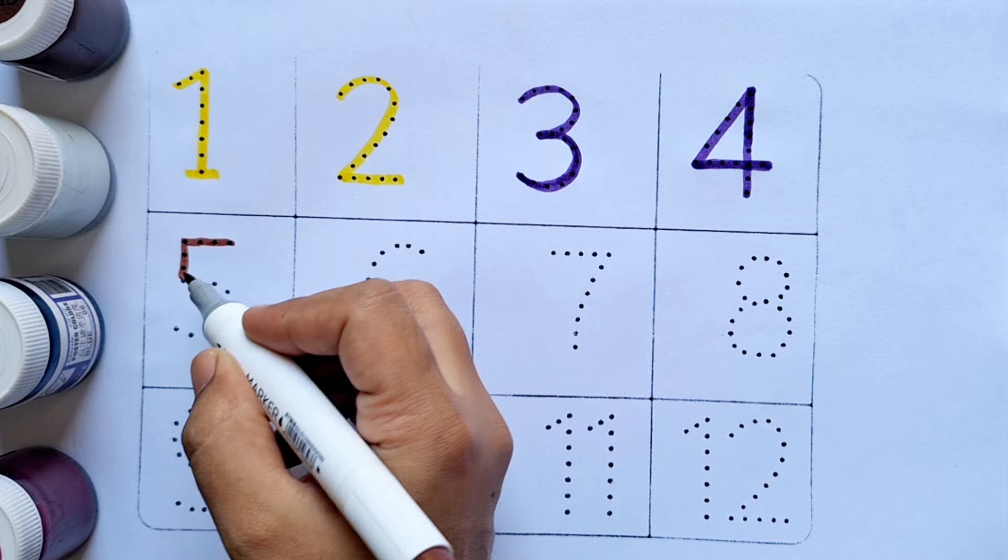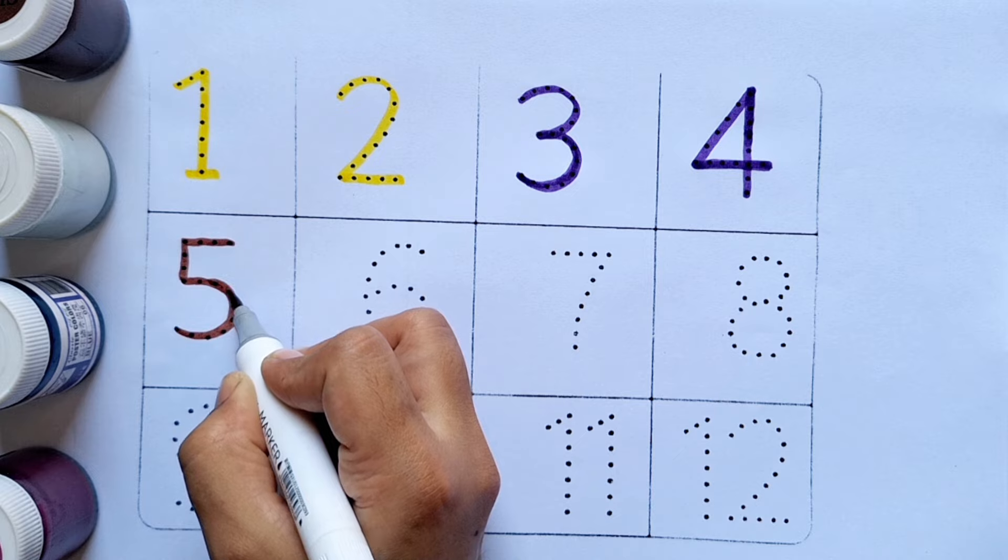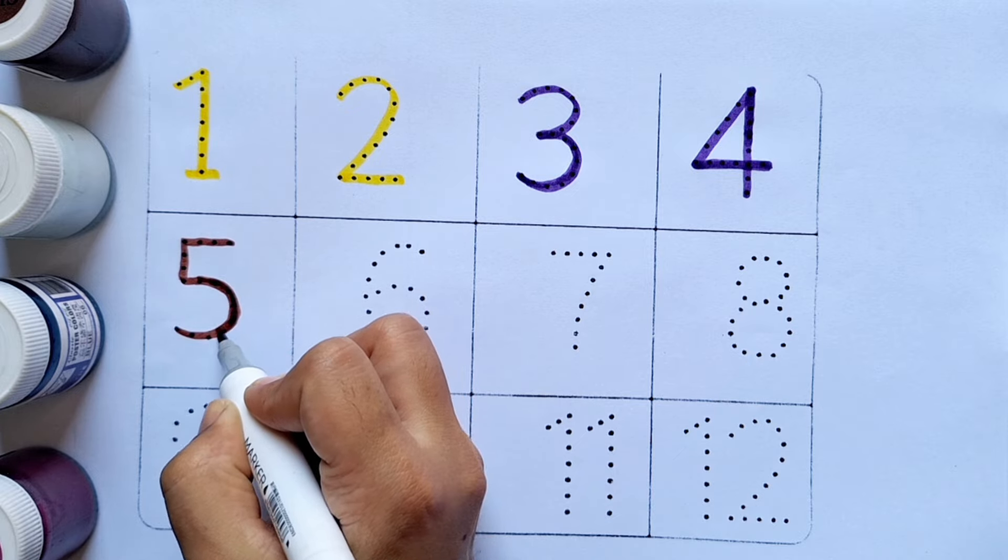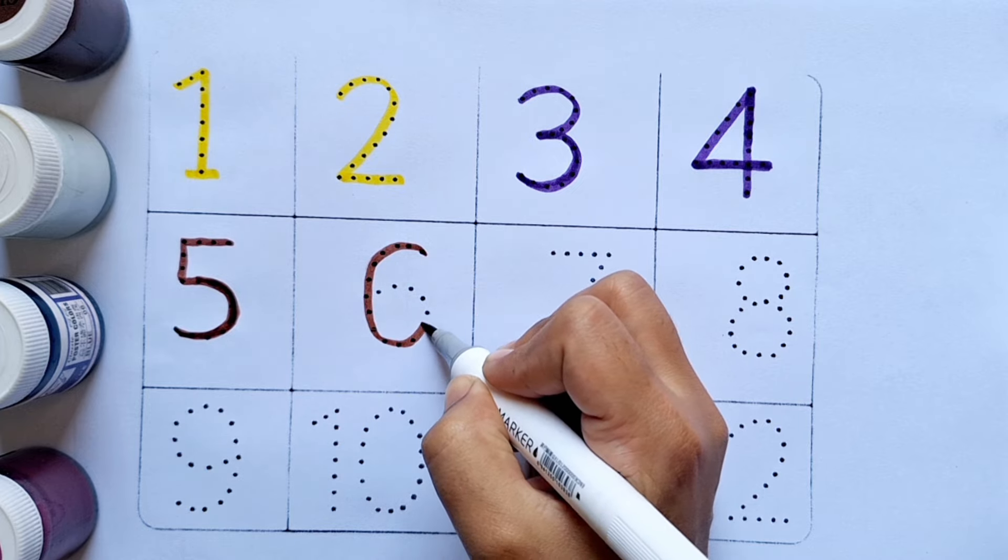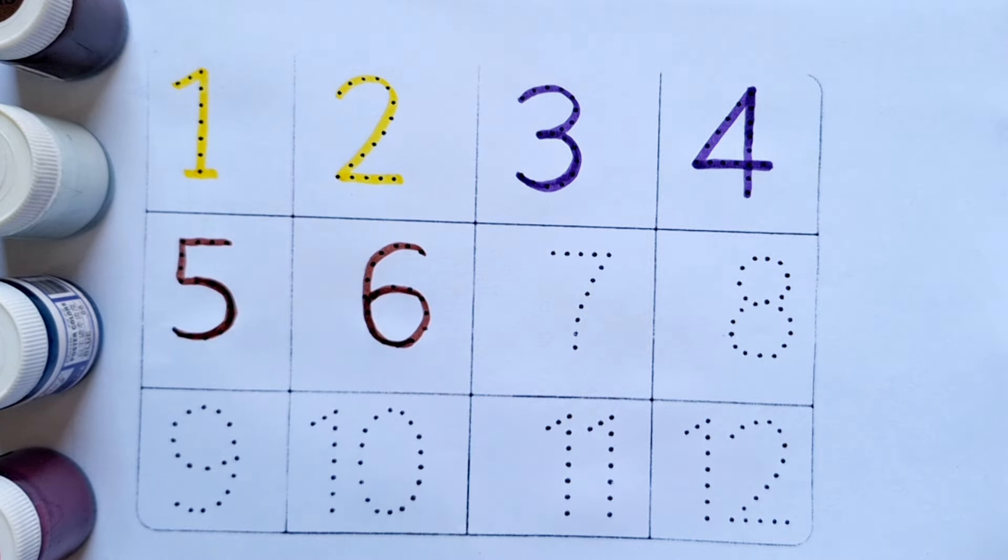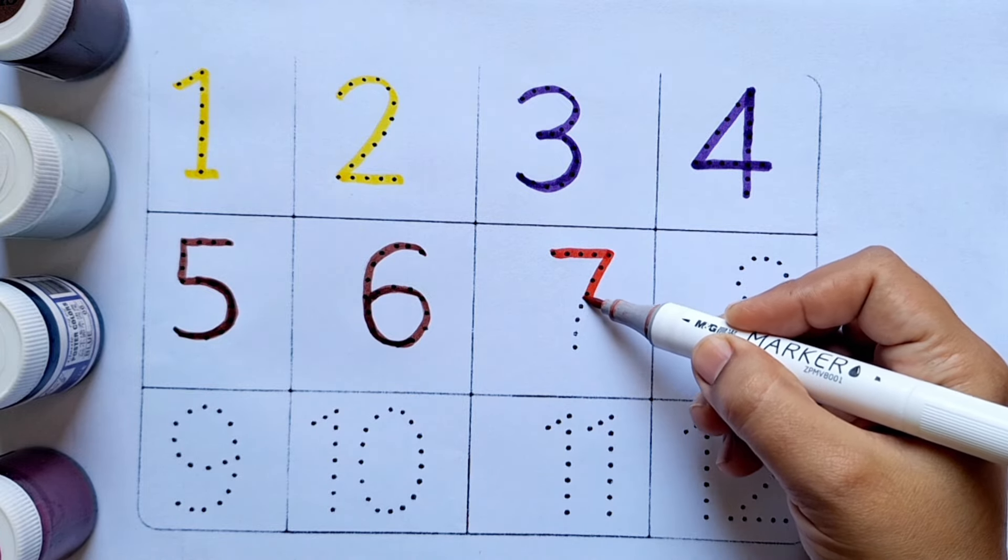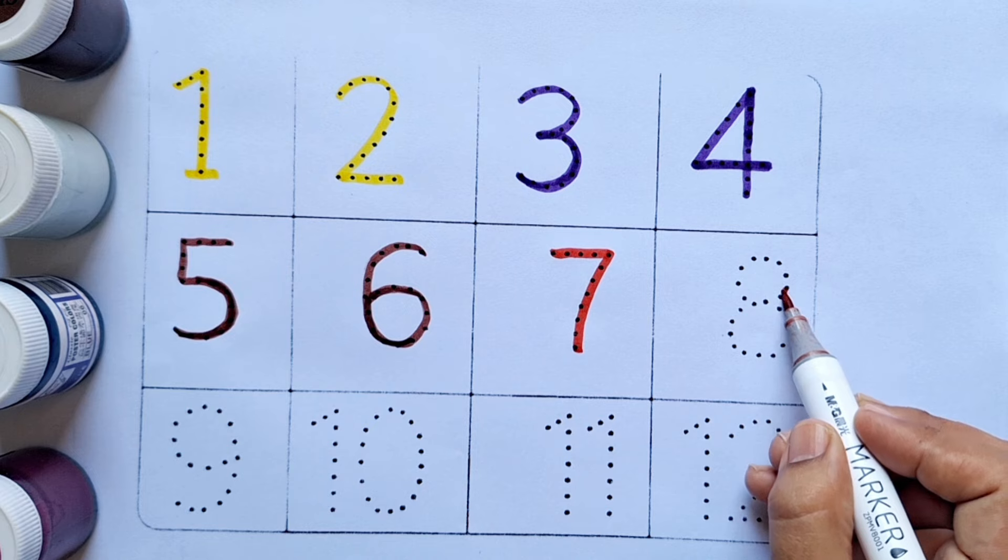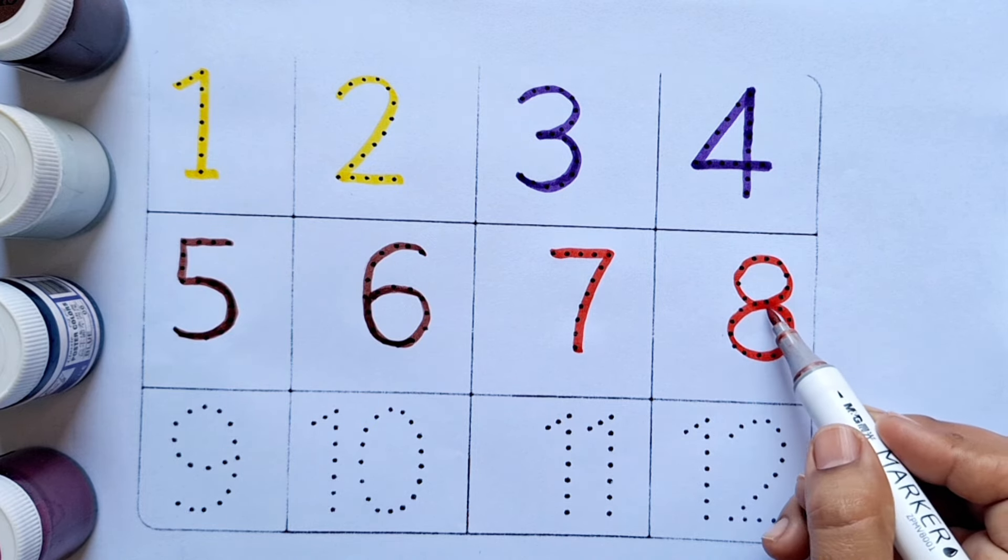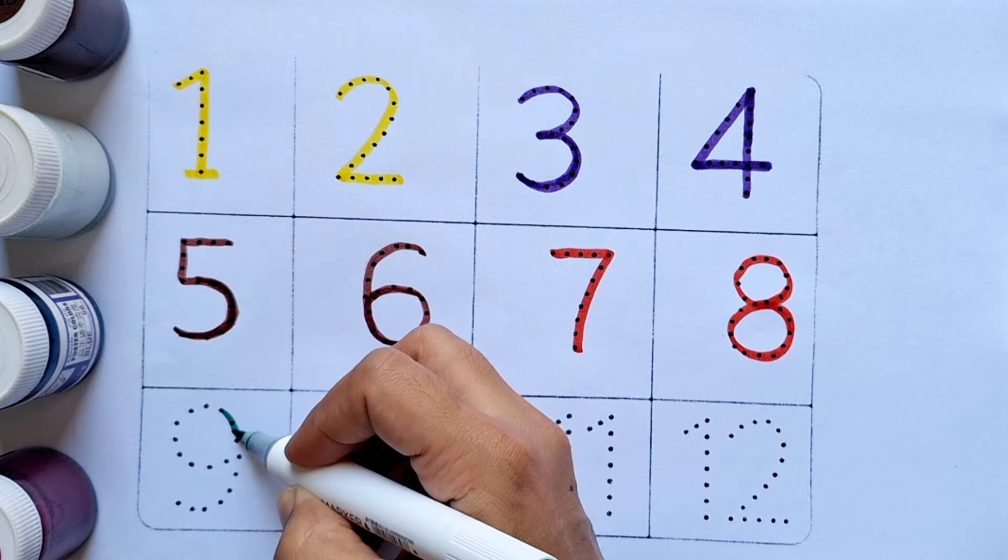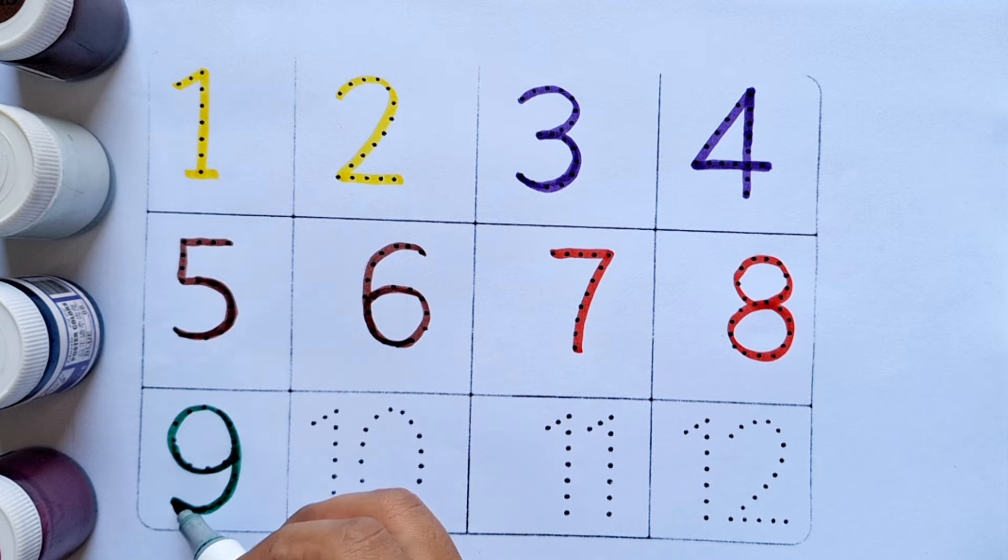Five. This is five. After four comes five. Six. This is six. After five comes six. Seven. This is seven. After six comes seven. Eight. This is eight. After seven comes eight. Nine. This is nine. After eight comes nine.